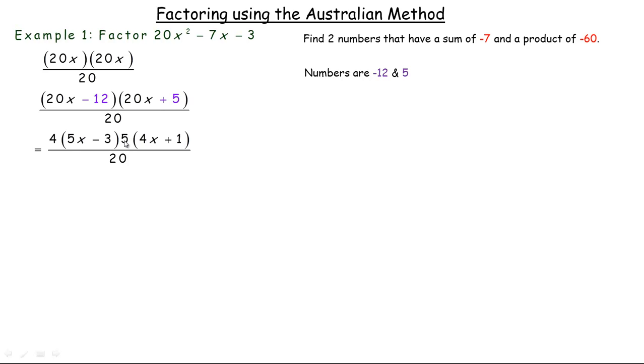Now these two numbers here, their product is always going to be the same as the A here. So 4 times 5 is 20, so that 4 and 5 will divide out with the 20, and so what we're left with is 5x minus 3 times 4x plus 1. And so that is now factored.